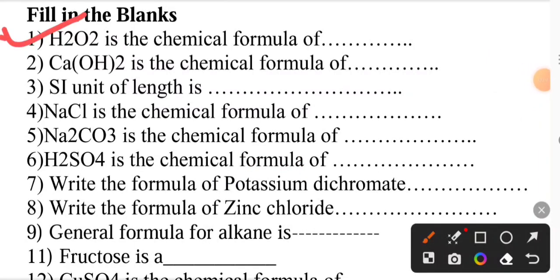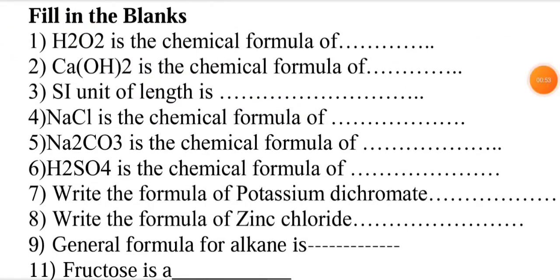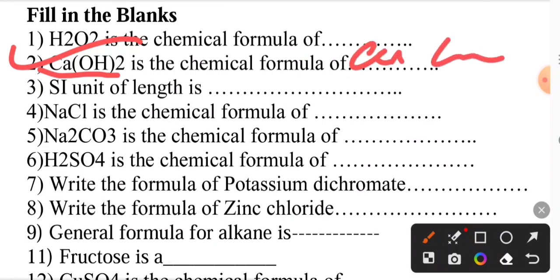H2O2 is the chemical formula of hydrogen peroxide. The next question: calcium hydroxide has the chemical formula Ca(OH)2.